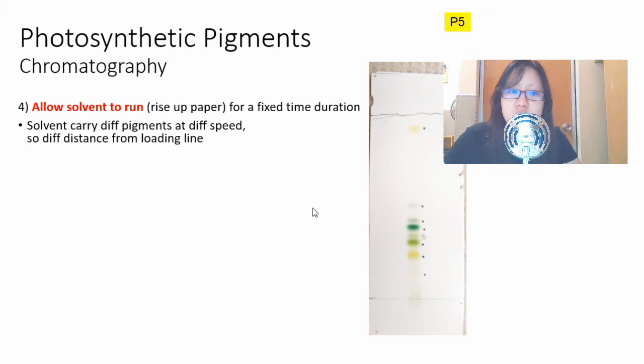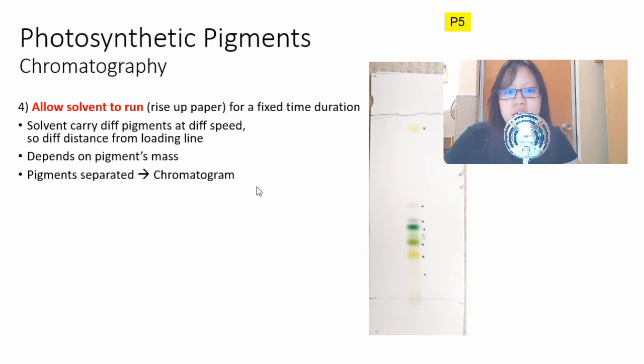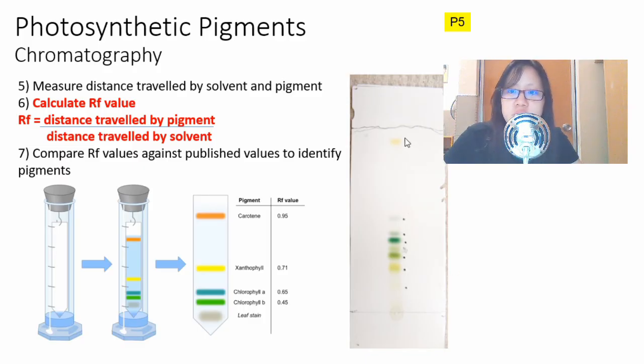Because the pigments have different mass, they would be carried by the solvent at different speeds. When you stop, you realize that it stops at different distances from the origin line or from the loading line. This depends on the pigment's mass and it also depends on the pigment solubility in the solvent. This thing that we have here is called a chromatogram.